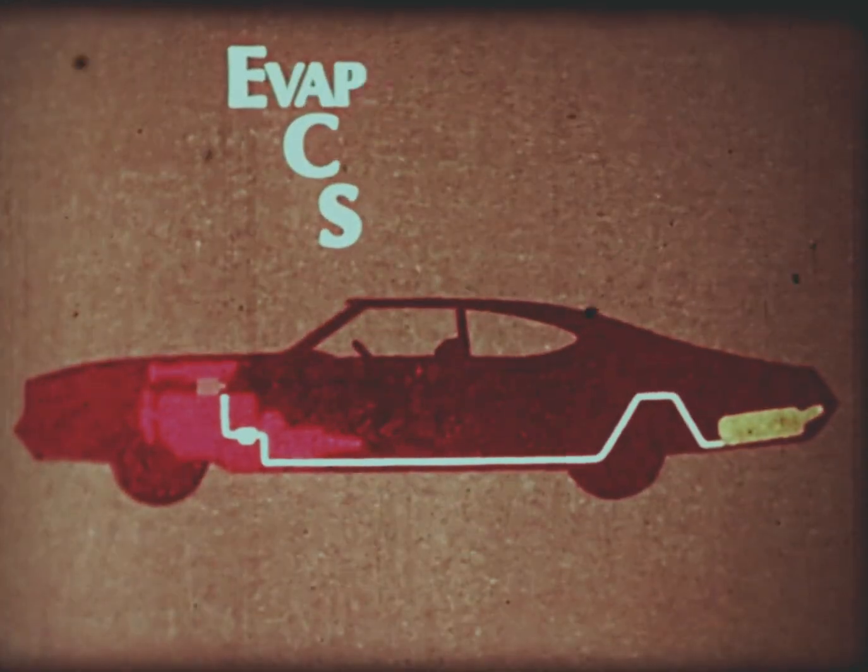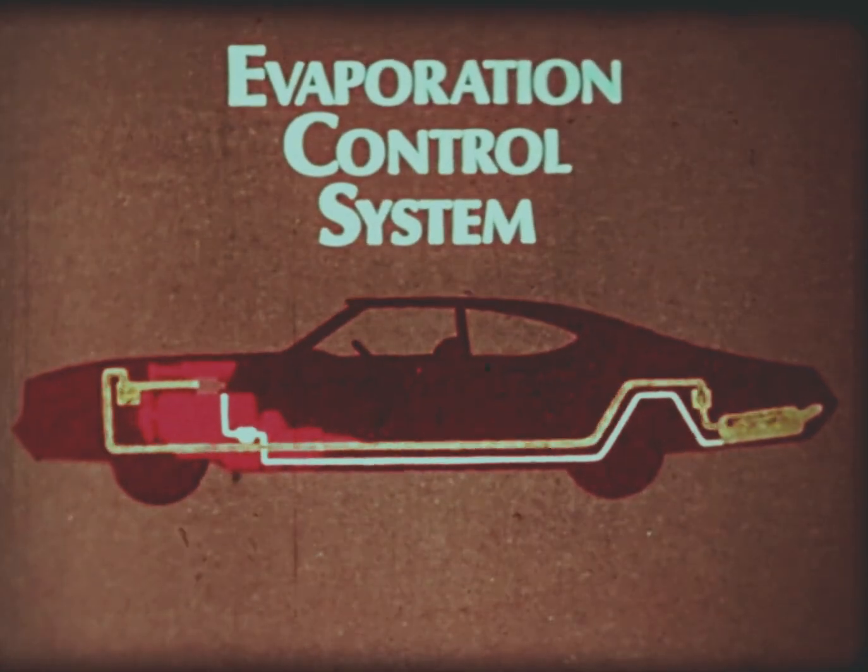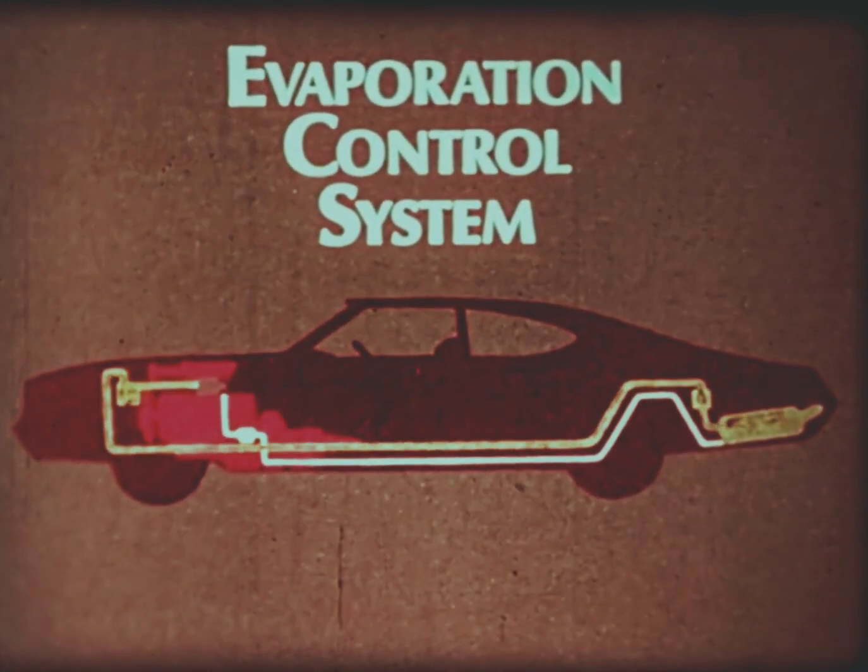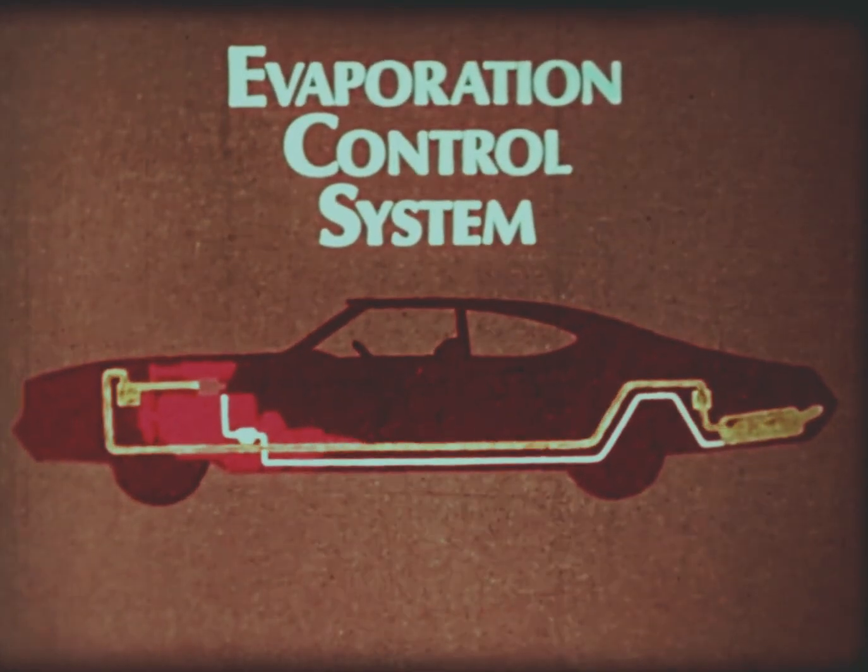The ECS, or Evaporation Control System, captures fuel vapors from the fuel tank when the engine is not running and stores them in a carbon container until they can be burned in the cylinders when the engine starts again.